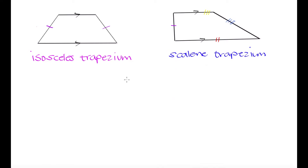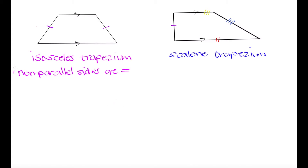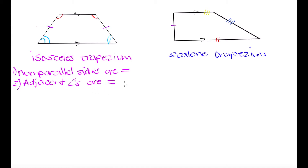In summary, to call a shape a trapezium it must have only one pair of opposite sides that are parallel. In an isosceles trapezium, the non-parallel sides are equal in length — that is the first property. The second property is that the adjacent angles are going to be equal: this angle is equal to this angle, and this angle is equal to this angle. Adjacent angles are congruent in an isosceles trapezium.